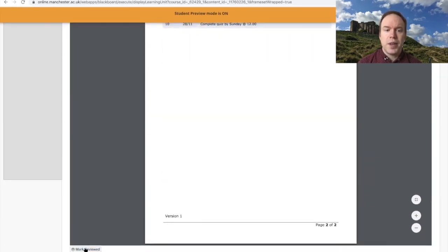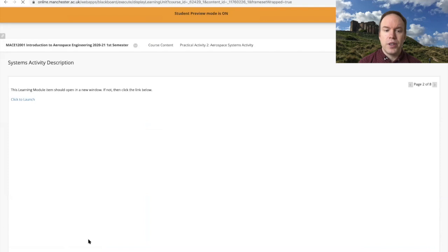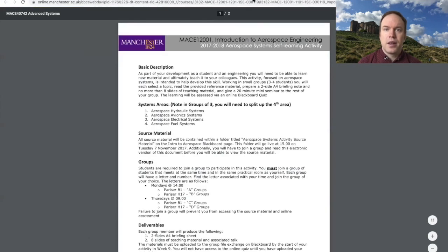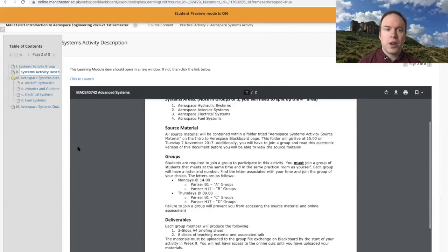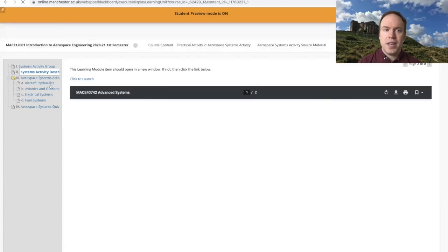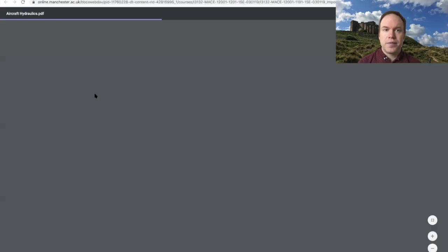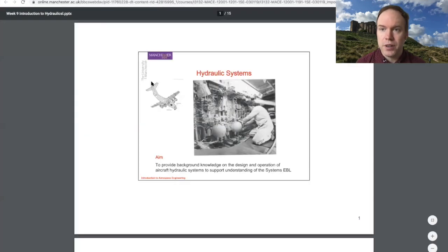Once you're done reading it, make sure you click Mark Reviewed. Once it is marked reviewed, you'll be able to see the source material in each of the bits and you can look at the two source material things.